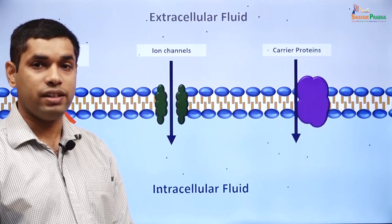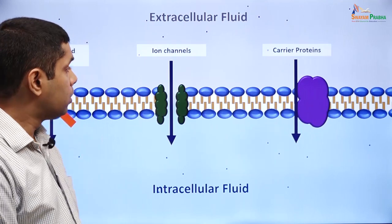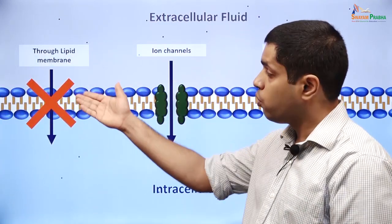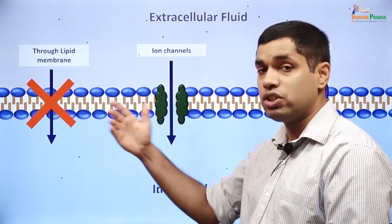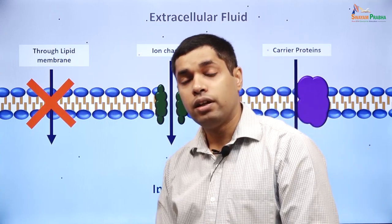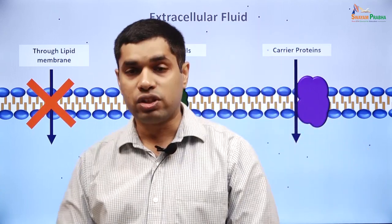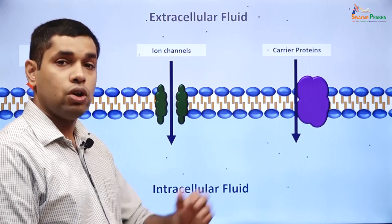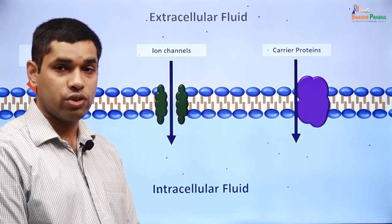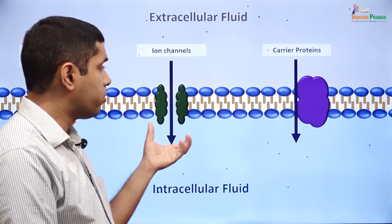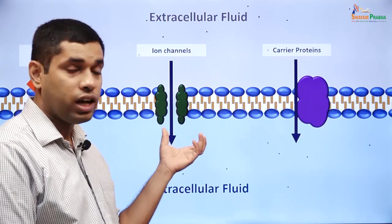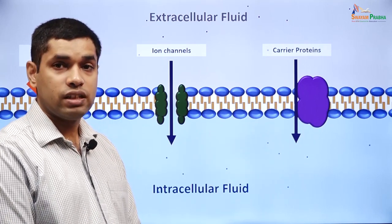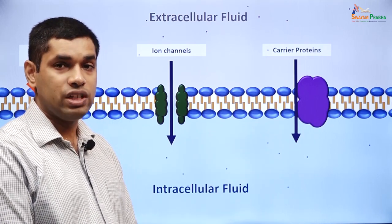So for a substance which cannot dissolve through the lipid membrane, the way it crosses the membrane is either through ion channels or through carrier proteins. We will discuss more about ion channels now, and we will also discuss carrier proteins in more detail.